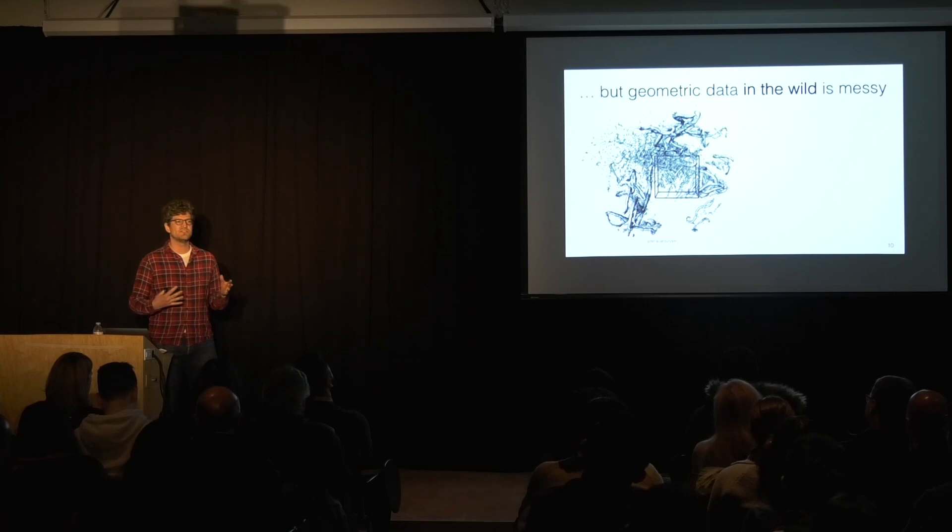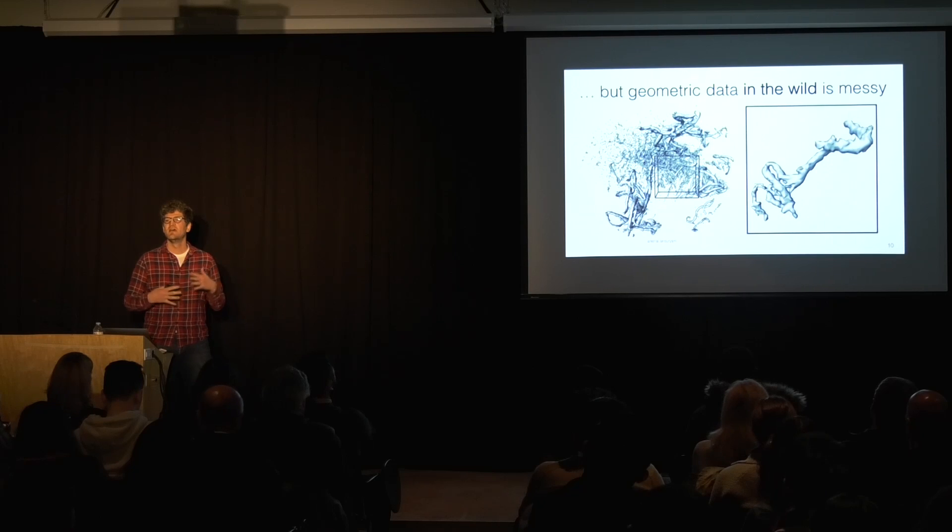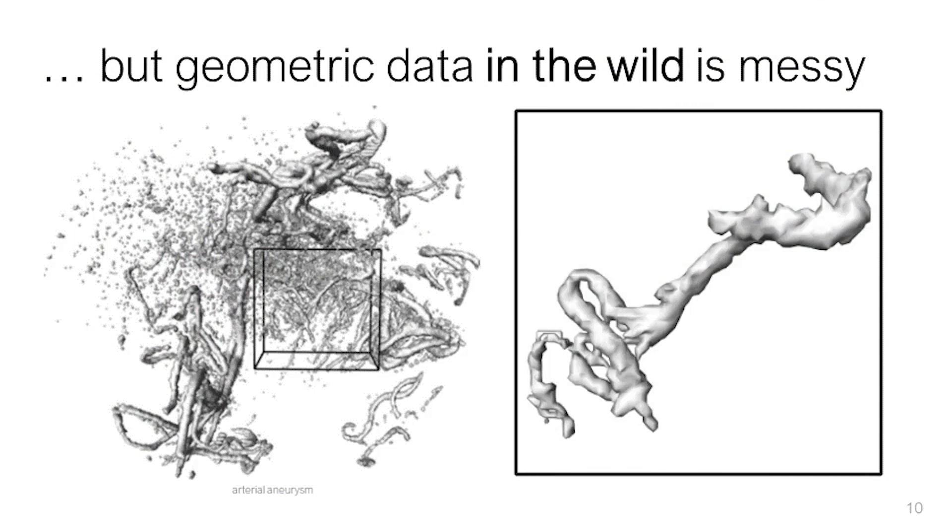The problem is that the geometric data that we capture out in the world is quite messy. So this is an example of an arterial scan. And you might be looking at this scan if you're hunting for an aneurysm, if you're trying to diagnose whether or not there's a problem inside of this artery that could cause almost sudden death for a patient.